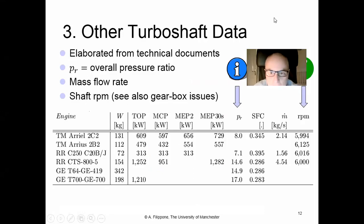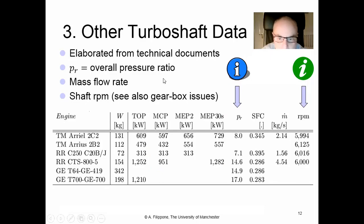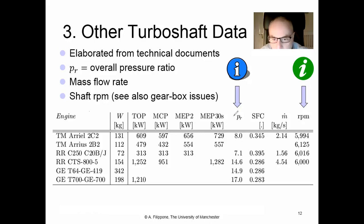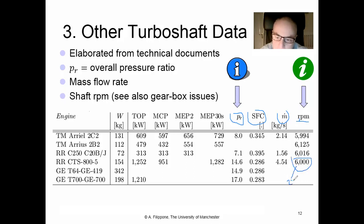A summary table of industry data includes several turboshaft engines with their official weight, takeoff power, maximum continuous power, two emergency power ratings (2 minutes and 30 seconds), overall pressure ratio (PR), SFC, mass flow into the engine, and output shaft RPM. For example, an engine with a 6,000 RPM output shaft powering a main rotor at 250 RPM requires a reduction ratio of 6,000 to 250 — illustrating the substantial gearbox reduction needed.